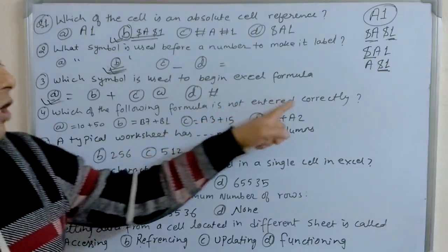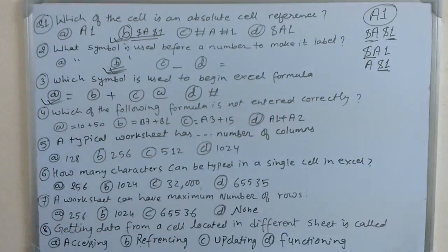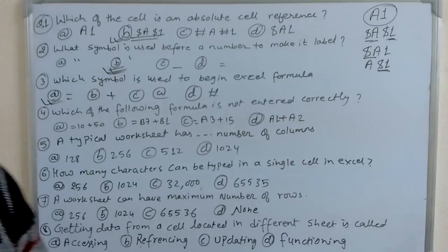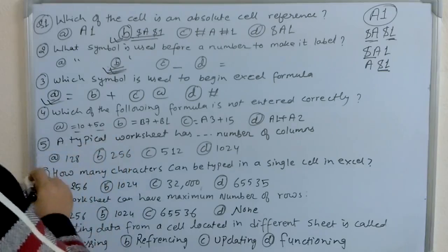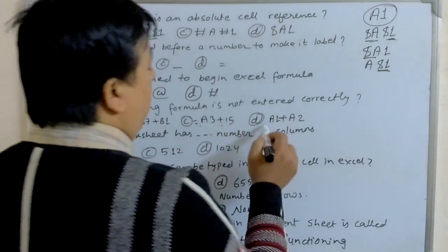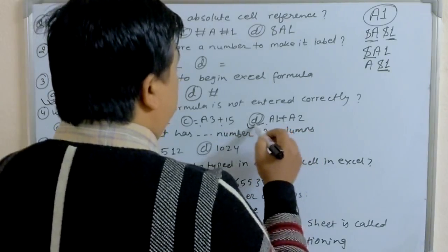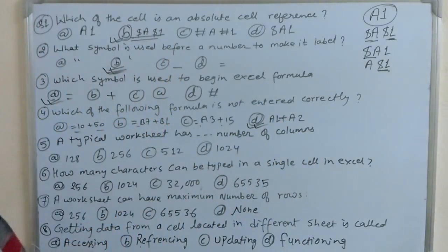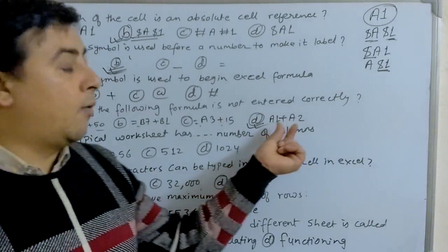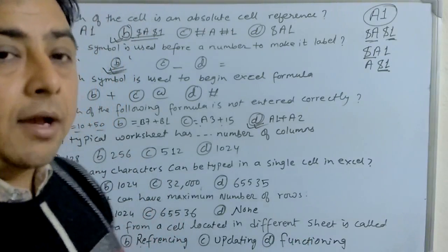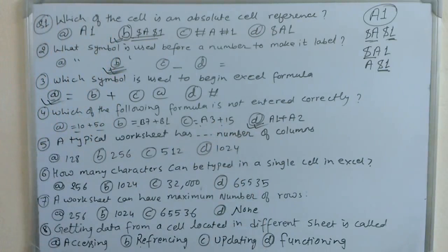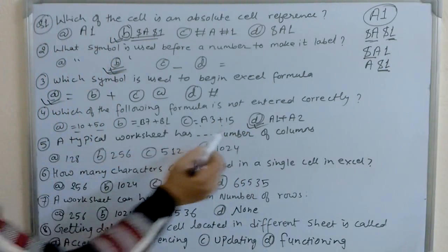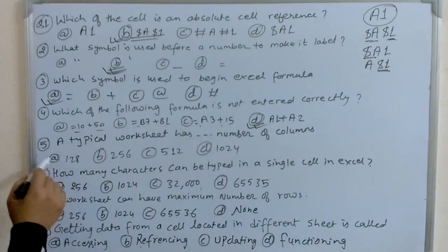The next question is: which of the following formula is not entered correctly? To use formulas in Excel, we must use an equal sign. Options A, B, C, and D — options A, B, and C have the equal sign, but option D does not have an equal sign. If we write A1 plus A2 without the equal sign, we will not get the output, because always the formula begins with the equal sign in Excel. So D is the answer.